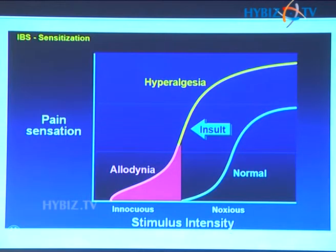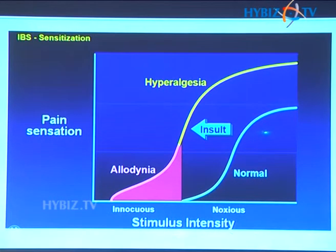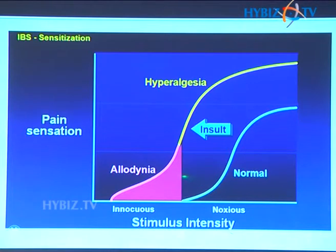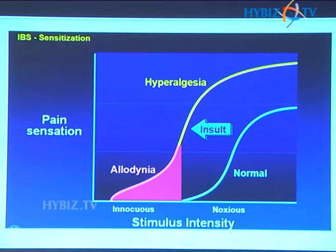Looking at the concept of visceral hypersensitivity: anybody who receives a noxious stimulus will send off a pain signal, and the injured area becomes increasingly sensitive. An innocuous stimulus which is not supposed to produce any pain signal starts to send a pain signal — that is called allodynia.